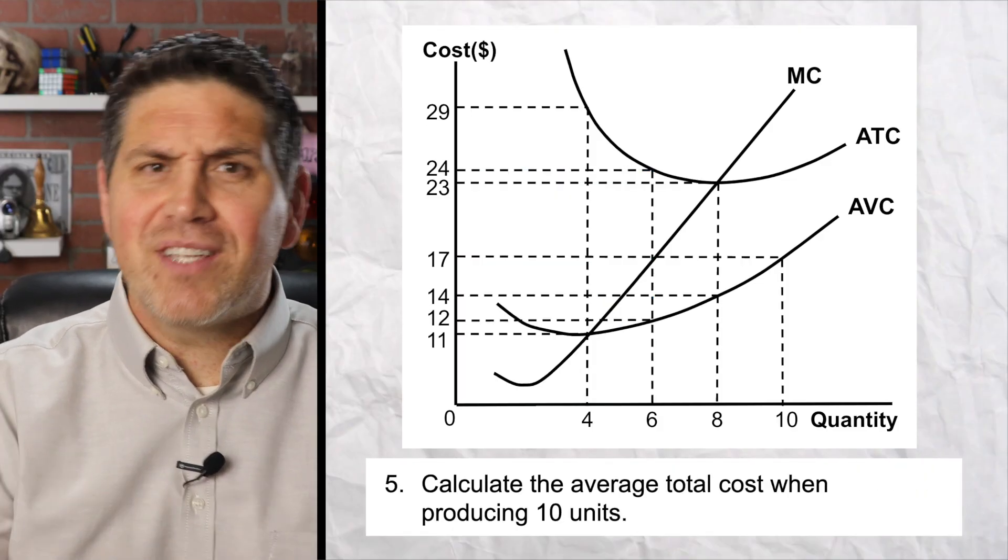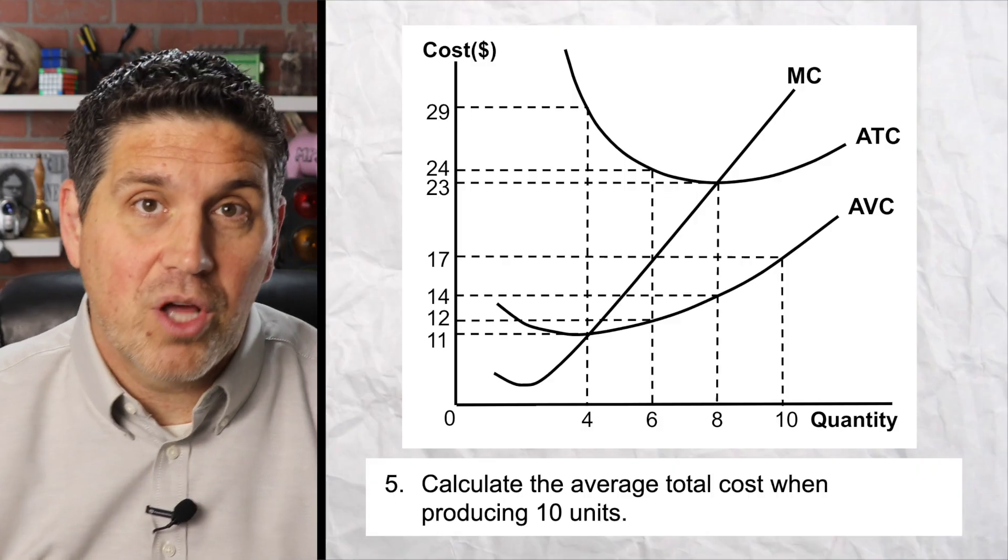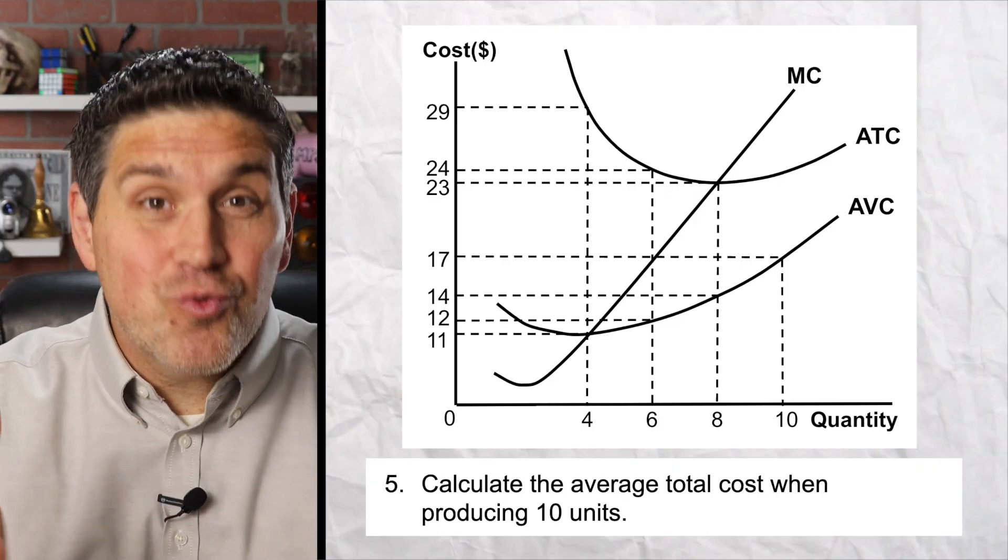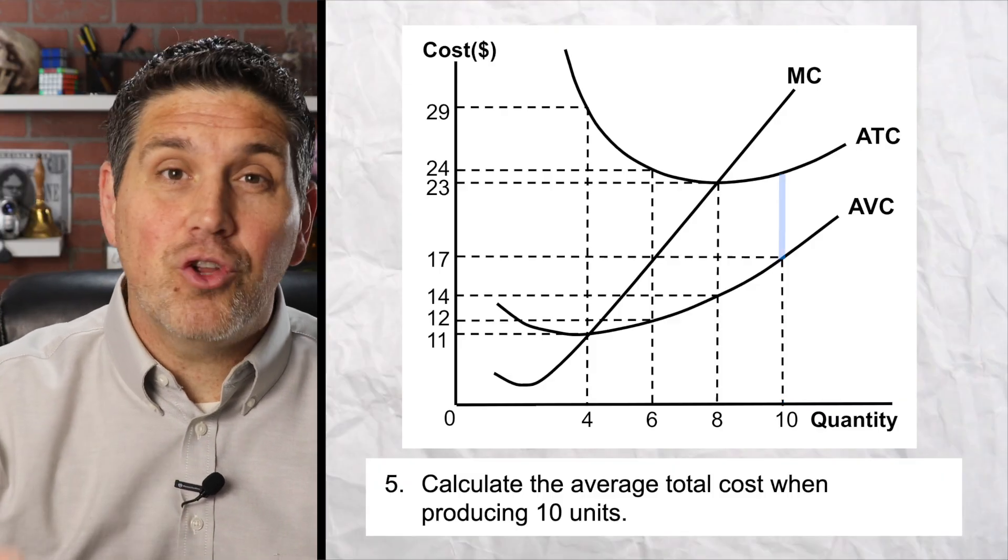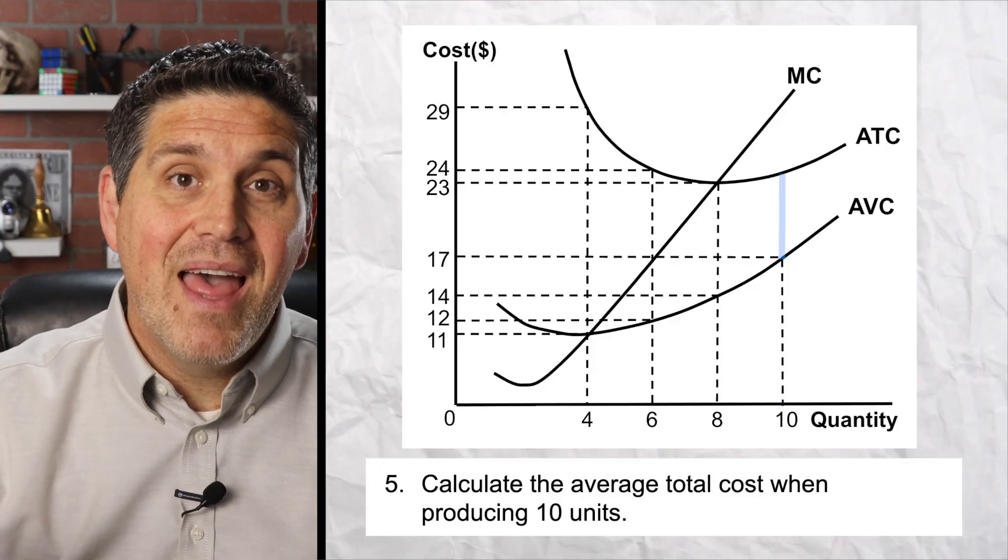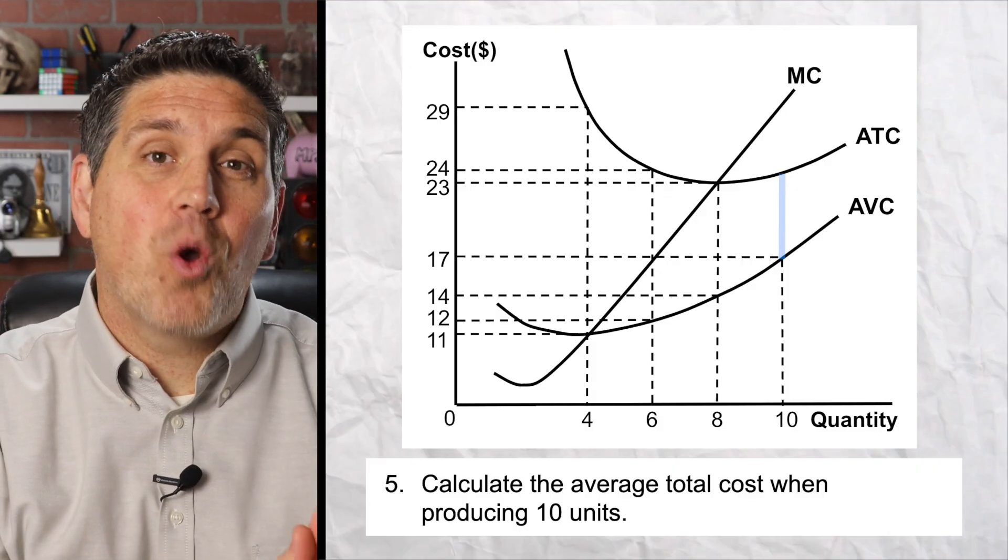Question five is the trickiest one. And you're not just guessing, looking at the graph, you have to actually do the calculation for the average total cost. And all the information you need is right in front of you. You know the average variable cost is 17. If you could just figure out that vertical distance between the average total cost and the average variable cost, then you'd be fine. To get that, just go back to your answer in question number three.